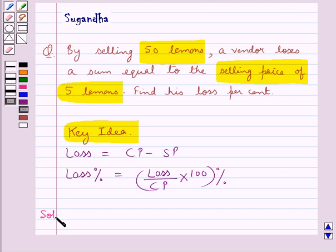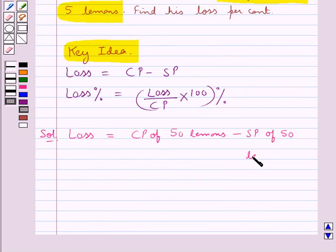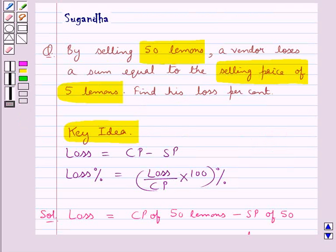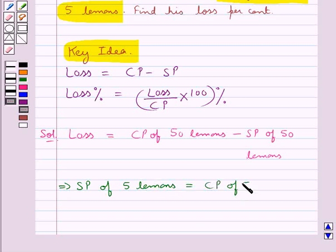Now let's move on to the solution. We know that loss is equal to cost price minus selling price, so here loss would be equal to the cost price of 50 lemons minus the selling price of 50 lemons. But we have that the vendor losses a sum equal to the selling price of 5 lemons, so in place of loss we can write selling price of 5 lemons.